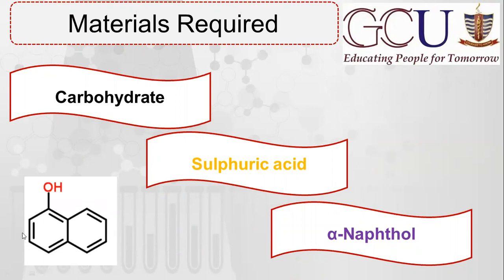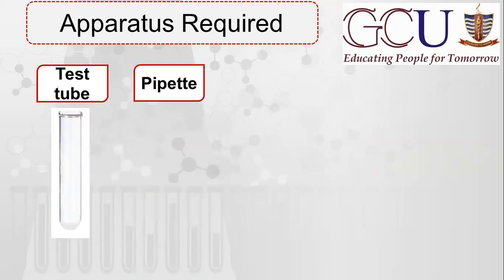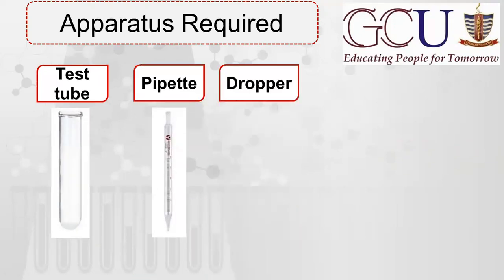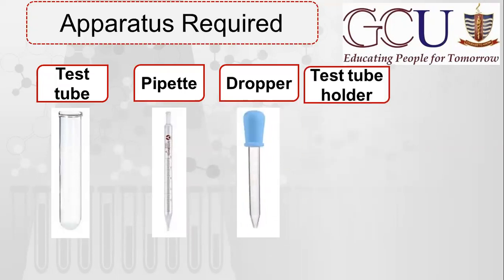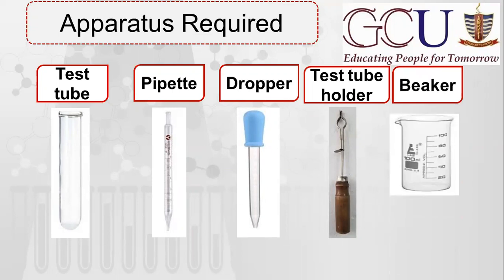Alpha-naphthol का formula देखते हैं. Apparatus के लिए हमें test tube चाहिए, pipette चाहिए, dropper की भी ज़रूरत है, test tube holder और beaker चाहिए. Beaker में हमने carbohydrate का solution रखना है. Dropper से हम Molisch reagent डालेंगे और pipette से sulfuric acid की measurement करेंगे — कि कितने ml sulfuric acid और कितने ml carbohydrate डालना है.